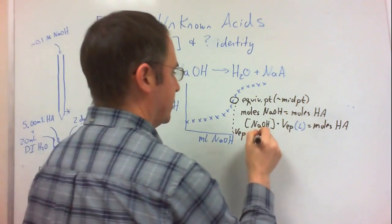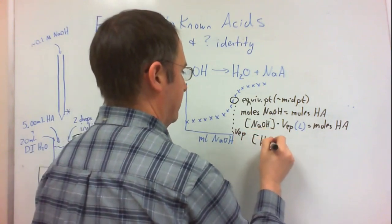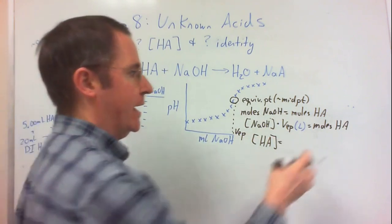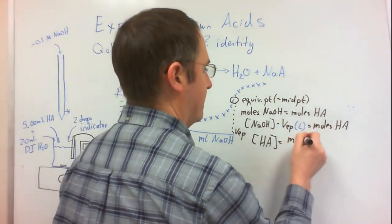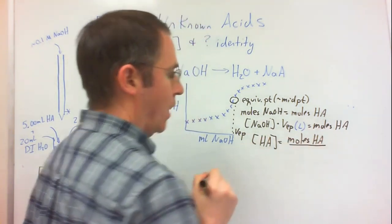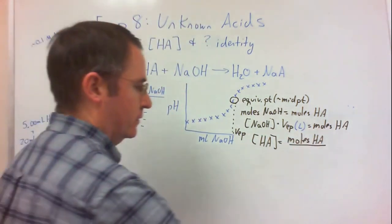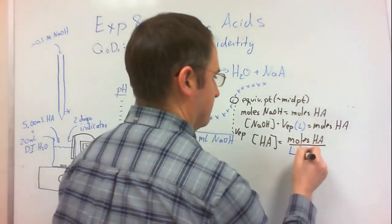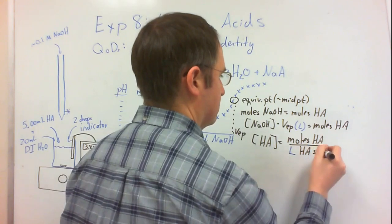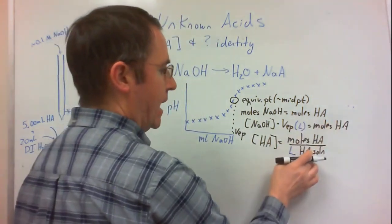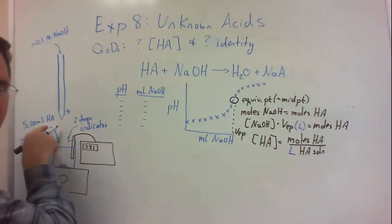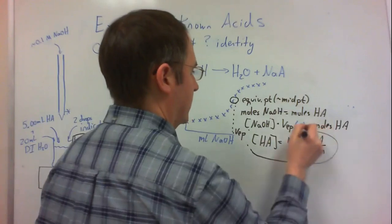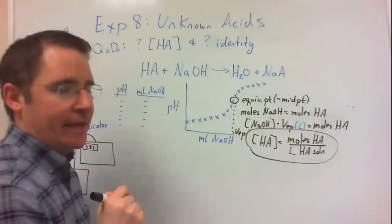I can then find the concentration, the molar concentration, by dividing that amount of weak acid, that number of moles of weak acid, by the volume of weak acid I start with. Once again, if we use moles, this volume needs to be in liters. So we divide our moles of weak acid by the volume of weak acid that we start with, both units of liters. So that's my concentration of weak acid calculation.